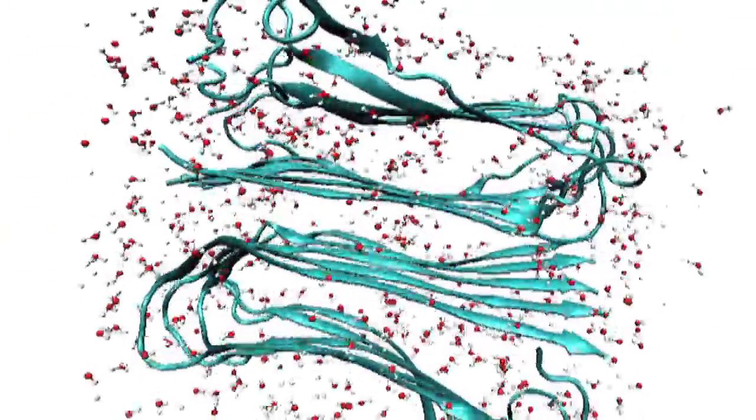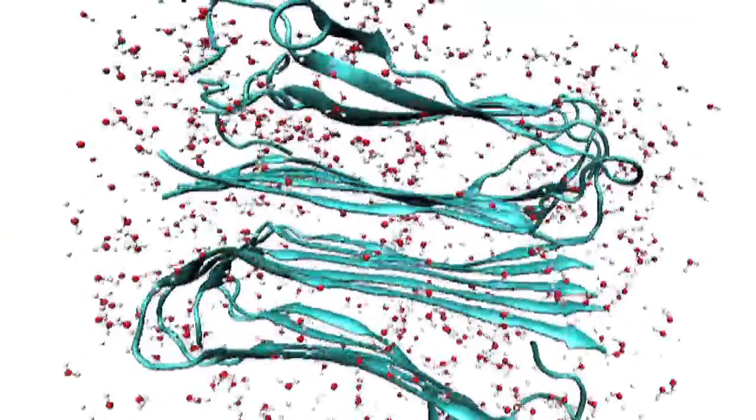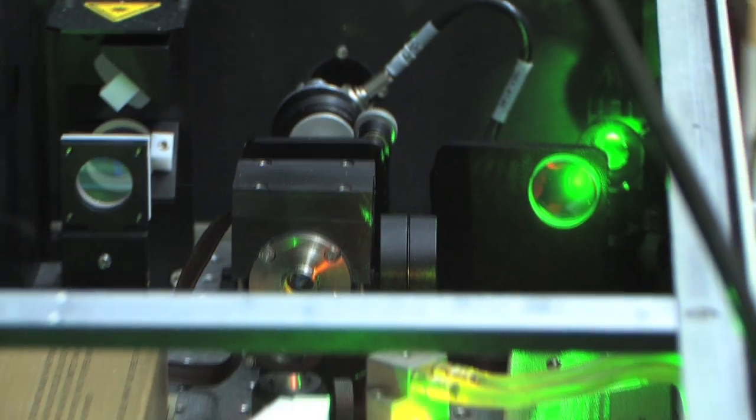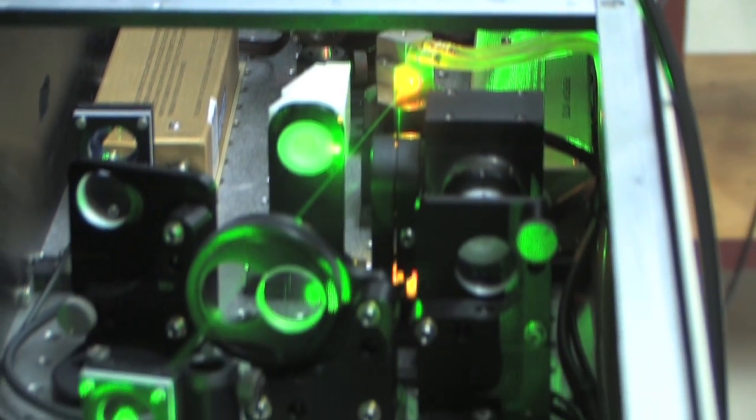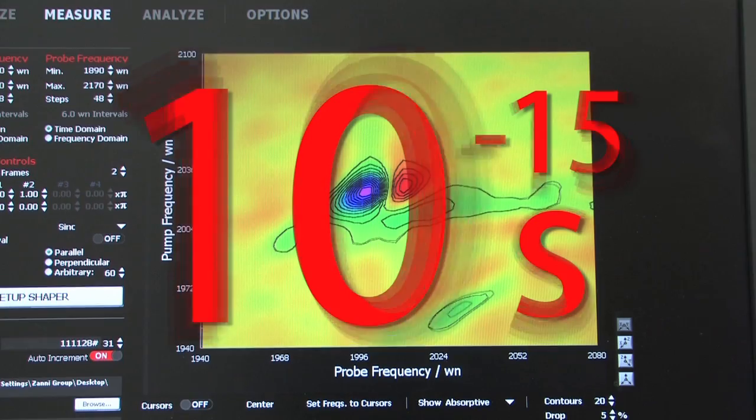We watch molecules dance, but molecules dance much faster. A femtosecond laser is a strobe light that pulses at 10 to the minus 15 seconds.